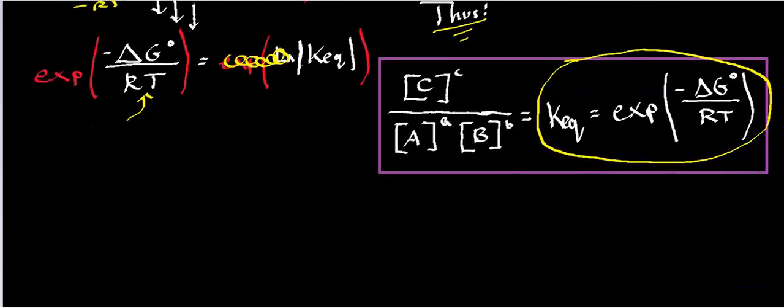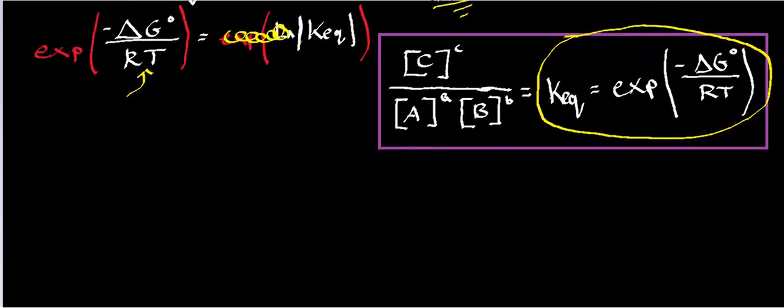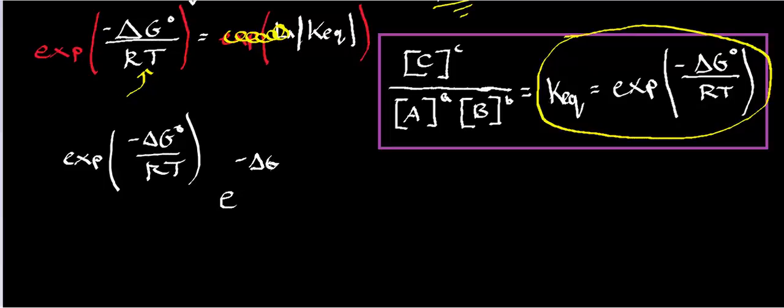Now, one thing I just want to point out is I have written here exponential of negative delta G standard over RT. This is a fancy way of writing exponential functions, because especially when you get into complicated physics and chemistry, you can have humongous terms inside the exponential function. So sometimes if you just write E, you'll have delta G over RT, and sometimes that can get pretty convoluted inside there.